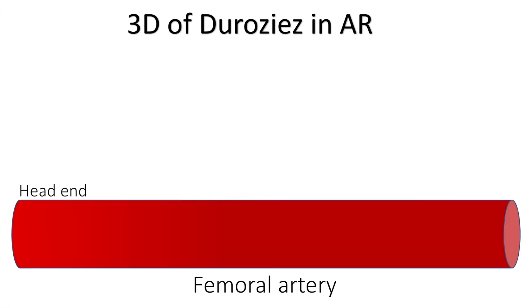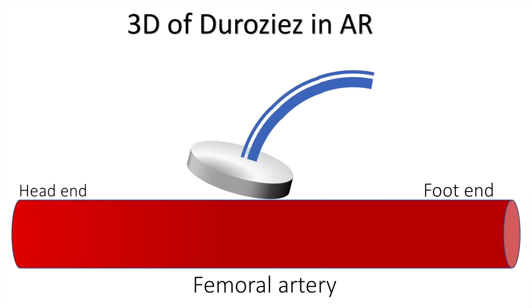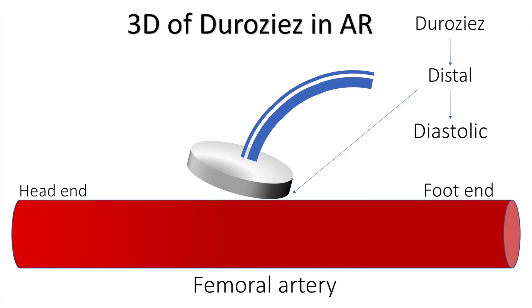The three Ds of Duroziez's murmur in aortic regurgitation are as follows. This is the femoral artery — this is the head end, this is the foot end. On placing the stethoscope in an inclined fashion with the inclination towards the foot end, that is, placed distally, the patient will have a diastolic murmur. A systolic murmur would be normal because we are obstructing the artery with our stethoscope. However, if this murmur is also present in the diastolic phase, then this is called Duroziez's murmur, which is pathological. Remember the three Ds: Duroziez's, distal, and diastolic.